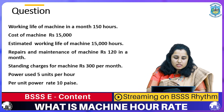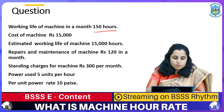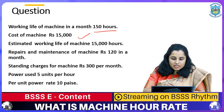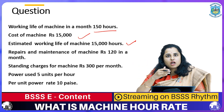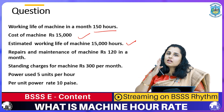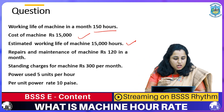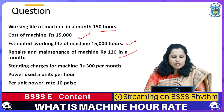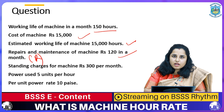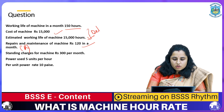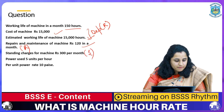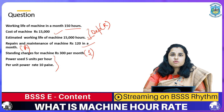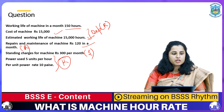Next question: Working life of a machine in a month is 150 hours. Cost of machine is ₹15,000; estimated working life is 15,000 hours. Repair and maintenance is ₹120 per month (running charge). Standing charges of the month are ₹300. Power used is 5 units per hour at a rate of 10 paise per unit — this is also a running charge.